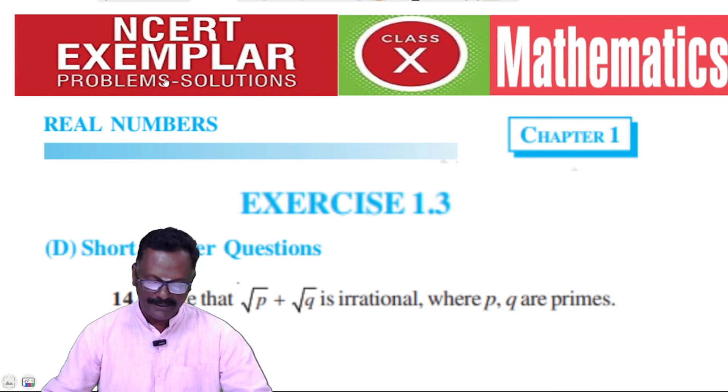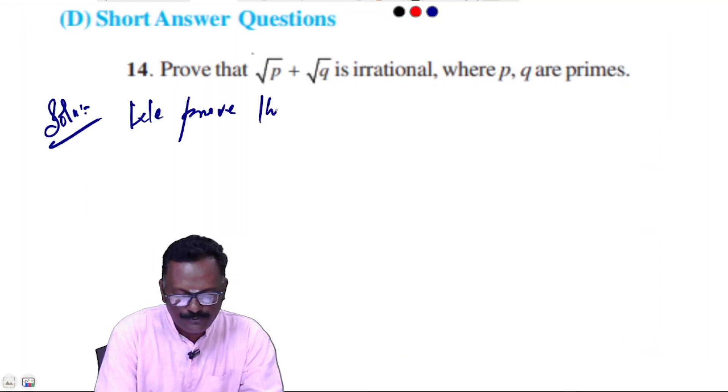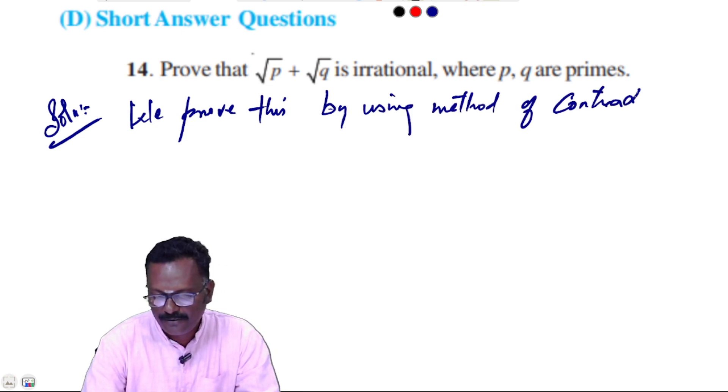Prove that √p + √q is irrational, where p and q are primes. Solution: We prove this by using method of contradiction.